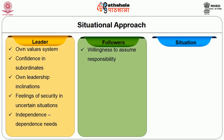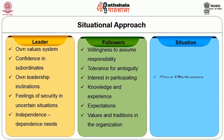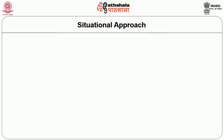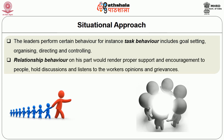For the followers: having willingness to assume responsibility, tolerance for ambiguity, interest in participating, wide knowledge and experience, expectations, and values and traditions in the organization. The situation may include group effectiveness, the nature of the problem, and pressure of time. With all these factors, leaders perform certain behaviours. Task behaviour includes goal setting, organizing, directing and controlling. Relationship behaviour would render proper support and encouragement to people, hold discussions and listen to workers' opinions and grievances.